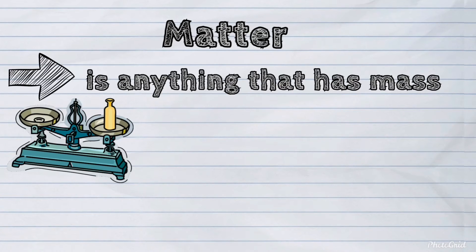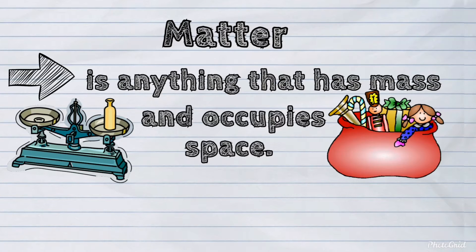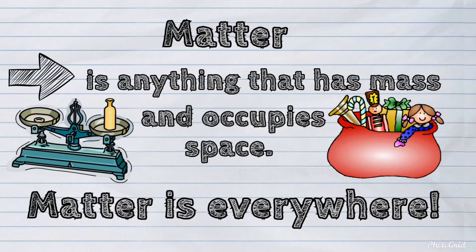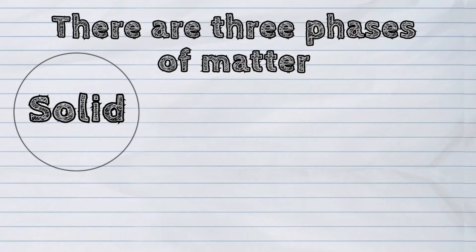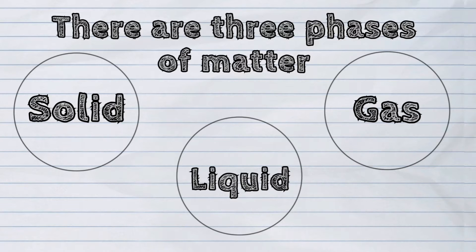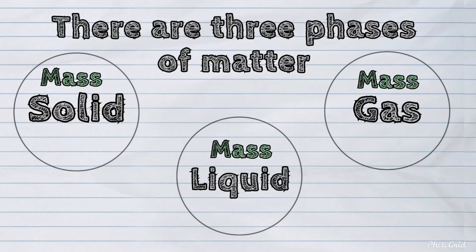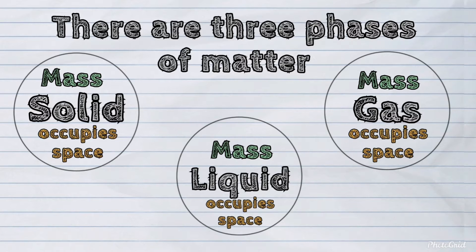Matter is anything that has mass and occupies space. Matter is everywhere. There are three phases of matter: solid, liquid, and gas. All of these phases have mass and occupy space.